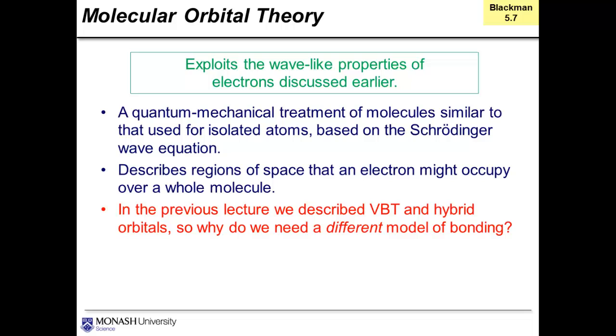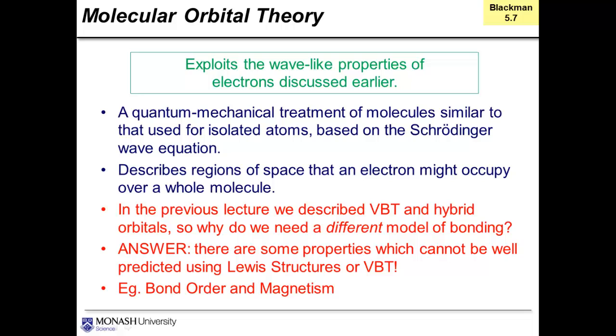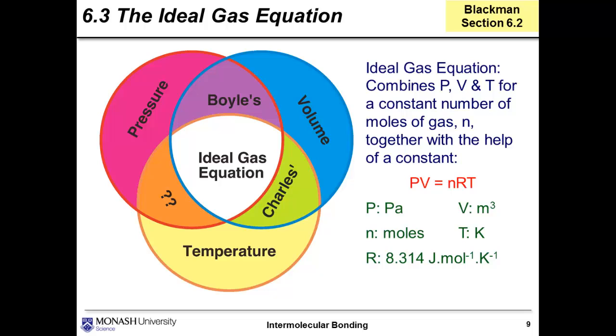In week 5 we're going to talk about molecular orbital theory. It exploits the wave-like properties of electrons discussed earlier when we were talking about atoms. It's a fully quantum mechanical treatment of molecules similar to that used for isolated atoms and is based on the Schrodinger wave equation. It describes regions of space that an electron might occupy over a whole molecule. In the previous lectures we described valence bond theory and hybrid orbitals. Why would we need another model of bonding? Well the answer is, there are simply some properties which cannot be well predicted using Lewis structures or valence bond theory. Some examples are bond order and magnetism, which really need MO theory to describe them properly.